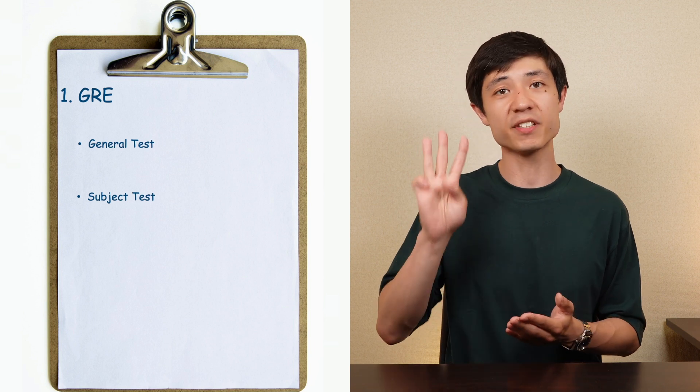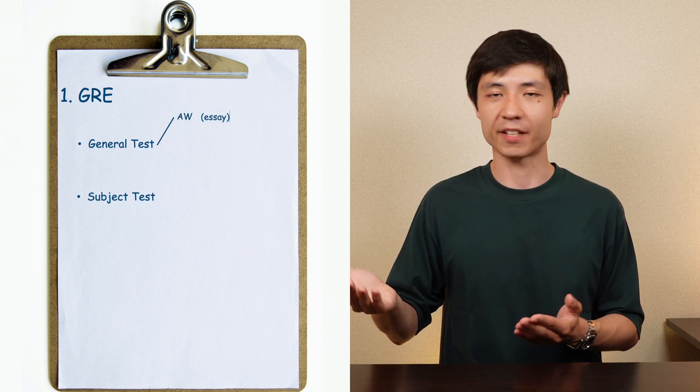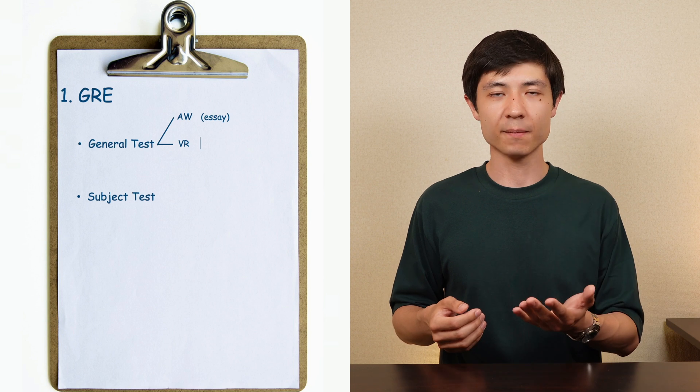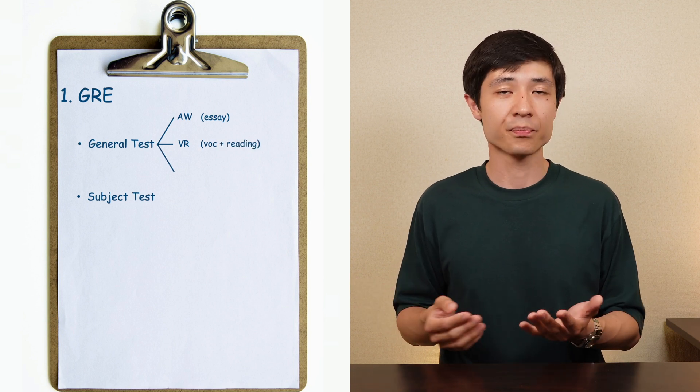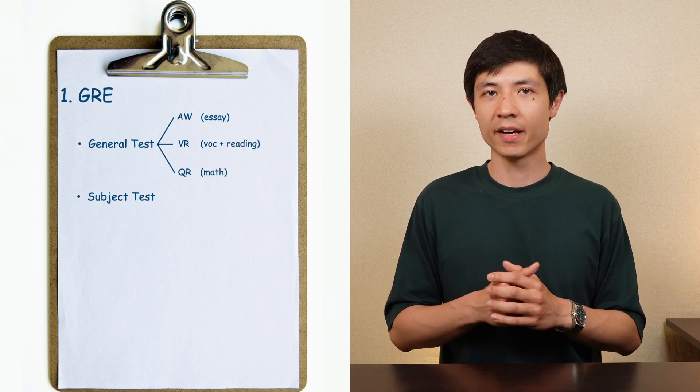Analytical writing, that's an essay, verbal reasoning, that's a vocabulary and reading test, and quantitative reasoning. Now the quantitative reasoning section is probably the most important one not to miss if you are applying for a program in machine learning, computer science, statistics, and so on.